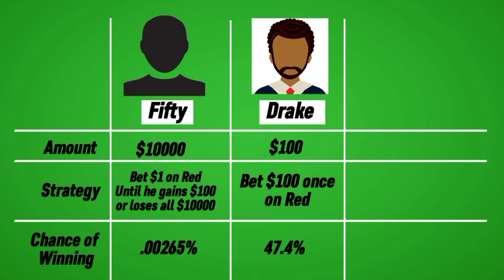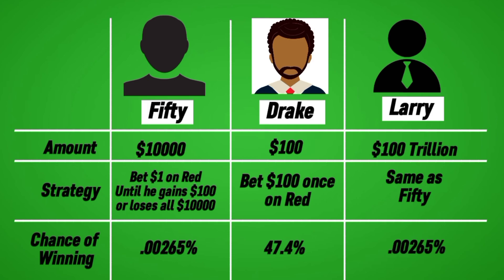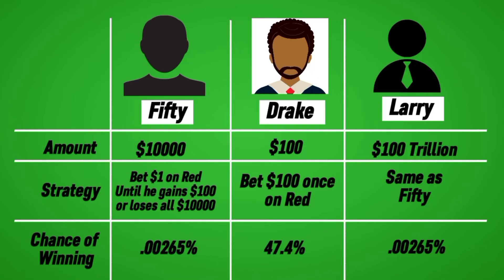50's chance of winning that $100 is a mere 0.00265%. Now, with the introduction of Larry, the wealthiest individual in the universe: Larry adopts the same betting strategy as 50, wagering $1 until he achieves 100 wins more than losses, except he begins with a colossal sum of $100 trillion. Despite this substantial financial advantage, the likelihood of him achieving the $100 goal remains at a mere 0.00265%, nearly assuring $100 trillion in losses before reaching $100. Thus, his situation mirrors that of 50. The disparity is so insignificant that it would require a high-precision calculator to discern — both Larry and 50 have almost identical chances of winning $100.